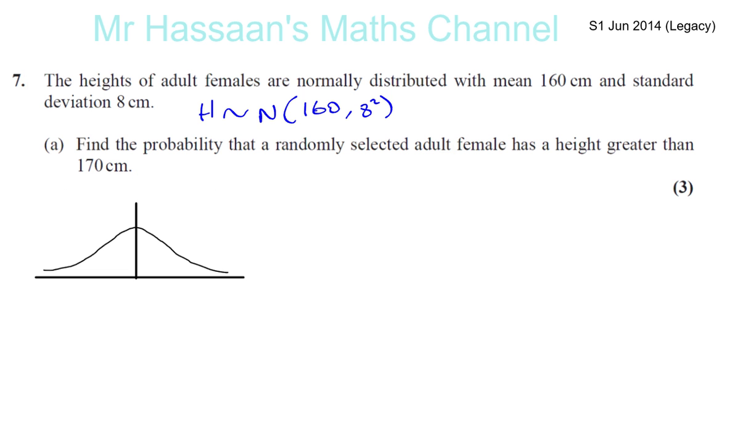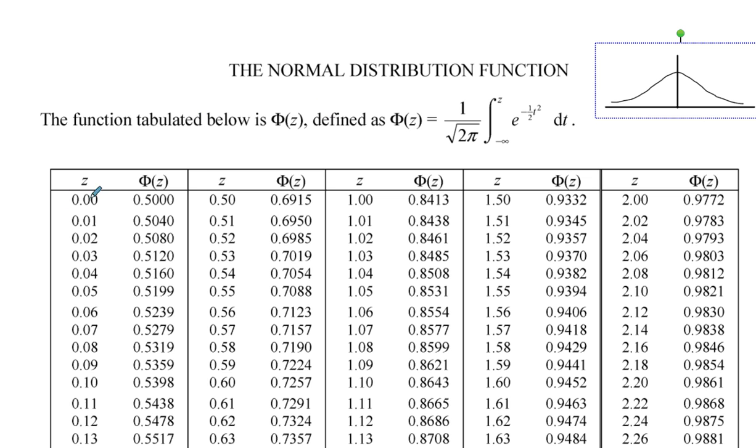So we know that we're trying to find the value of Z. Okay, in the, see what we have here is a table which represents something which is normally distributed with a mean of 0 and a standard deviation of 1.